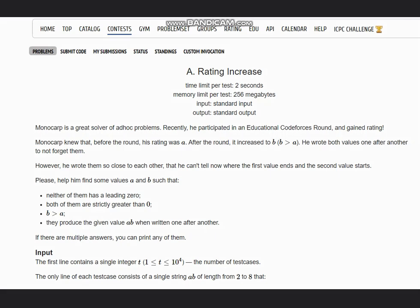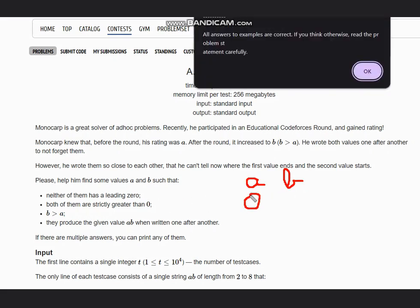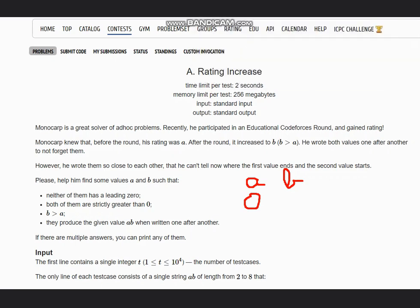The problem is we need to find A and B. The conditions are: neither of them has a leading zero, which means you can't have 01 as A or 002 as B. These things are not allowed.